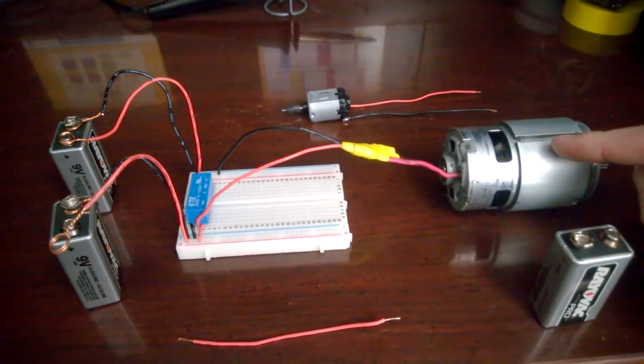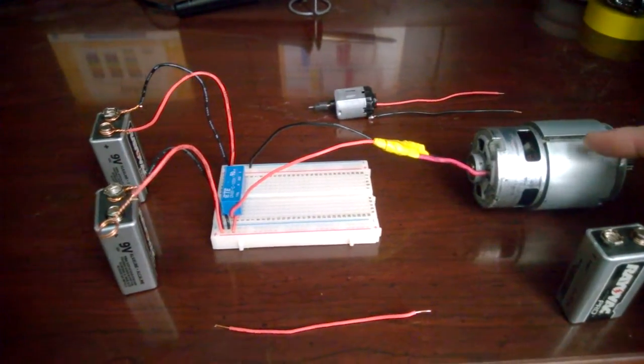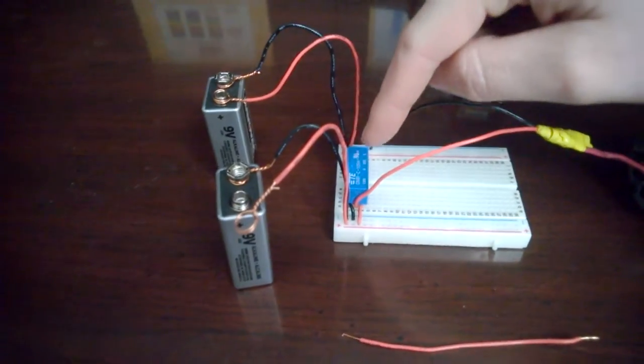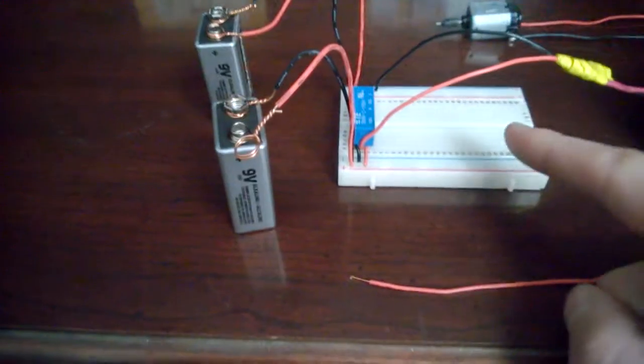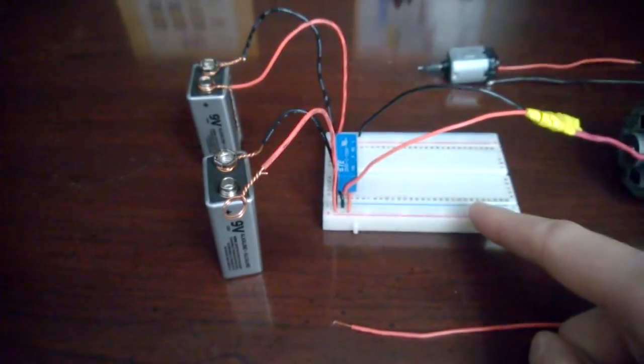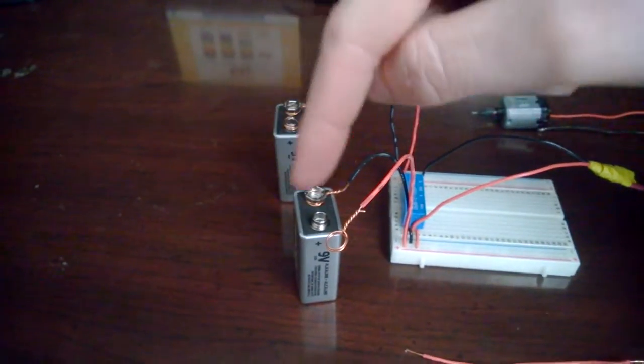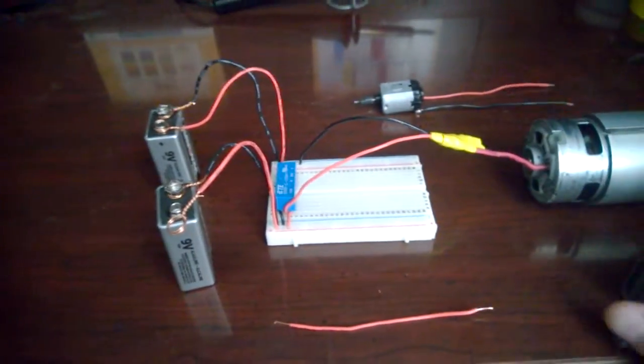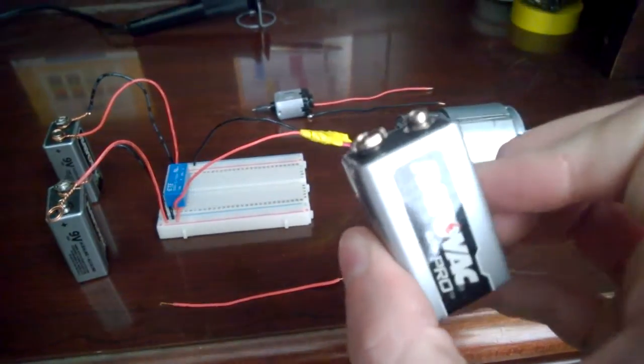This here is an 18 volt electric motor and I have it connected to what's called a reed relay using a breadboard. I have two separate power sources. This is a 9 volt battery.